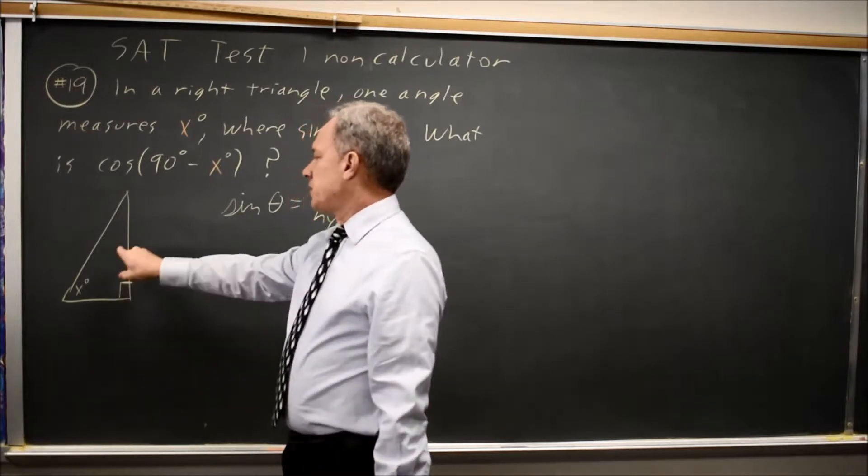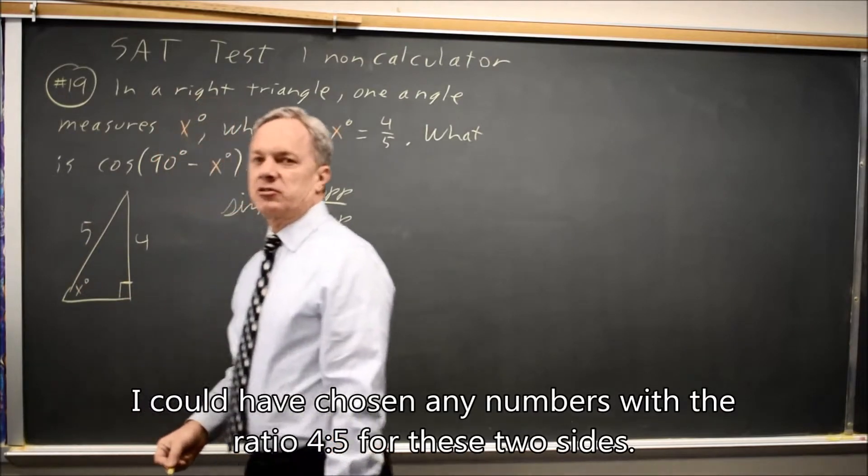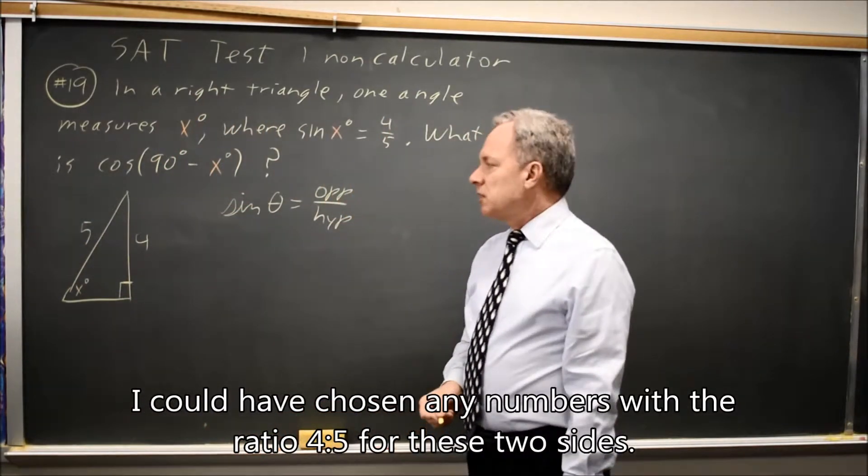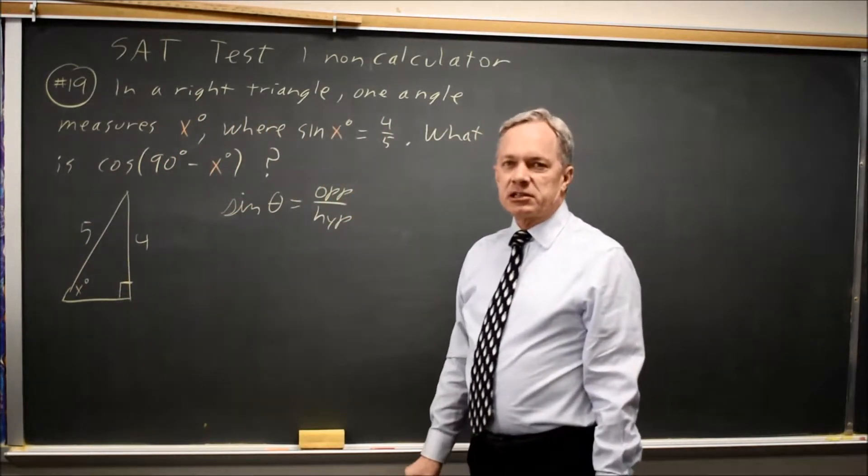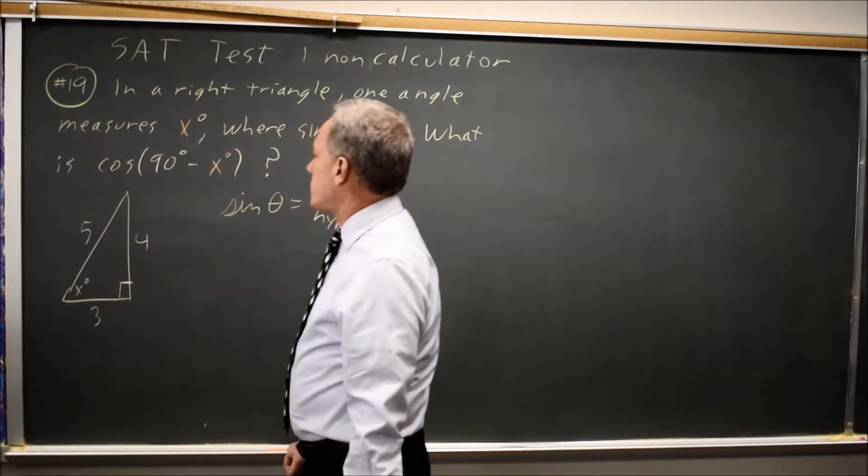The side opposite x over the hypotenuse is 4 over 5, so I'm going to label those sides 4 and 5. I could recognize this as a 3-4-5 triangle and label this side 3. We'll see if that matters.